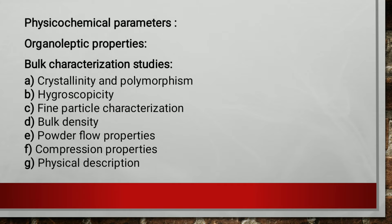Amorphous forms do not have a fixed or ordered internal structure. Amorphous forms have greater thermodynamic energy and solubility compared to crystalline forms, and hence are comparatively less stable than crystalline forms. Amorphous forms exhibit greater solubility than crystalline forms and are more likely to revert to a more stable form during storage. When a substance exists in more than one crystalline form, the various forms are called polymorphs, and the phenomenon is called polymorphism.